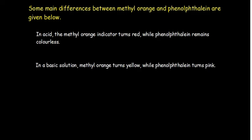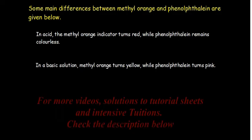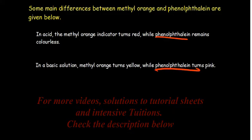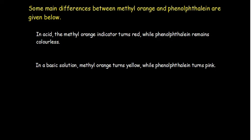Some main differences between methyl orange and phenolphthalein: in an acid, methyl orange indicator turns red while phenolphthalein remains colorless — the original color of phenolphthalein is colorless. In a basic solution, methyl orange turns yellow while phenolphthalein turns pink. Phenolphthalein only becomes purple when placed in a strong base; in weak bases it remains pink.